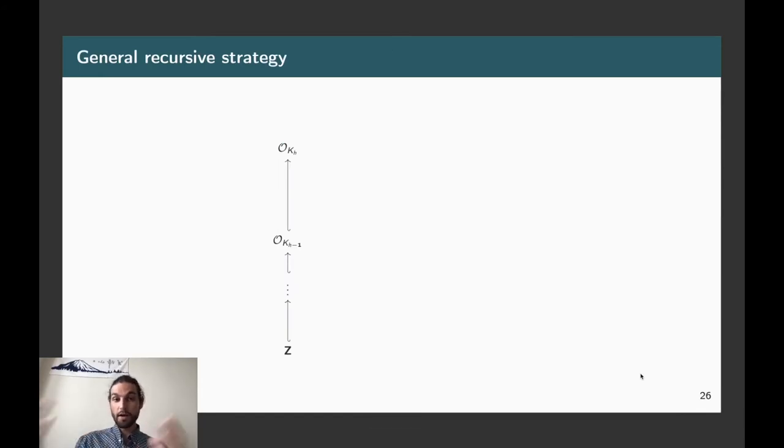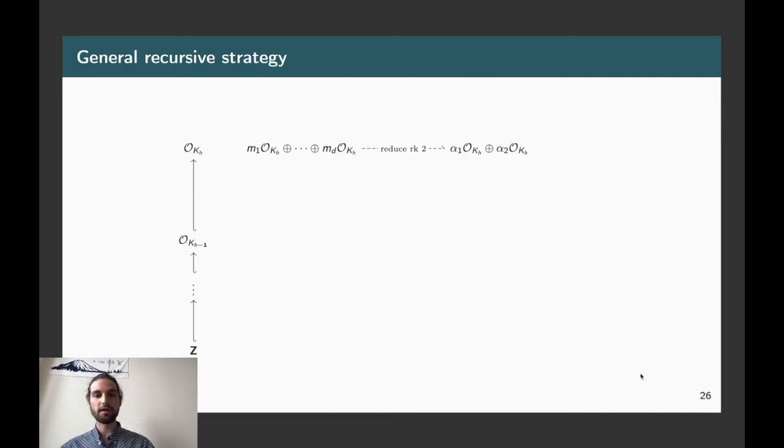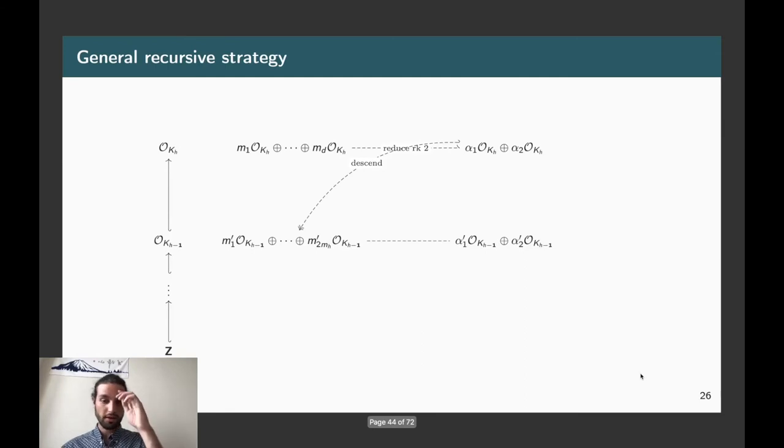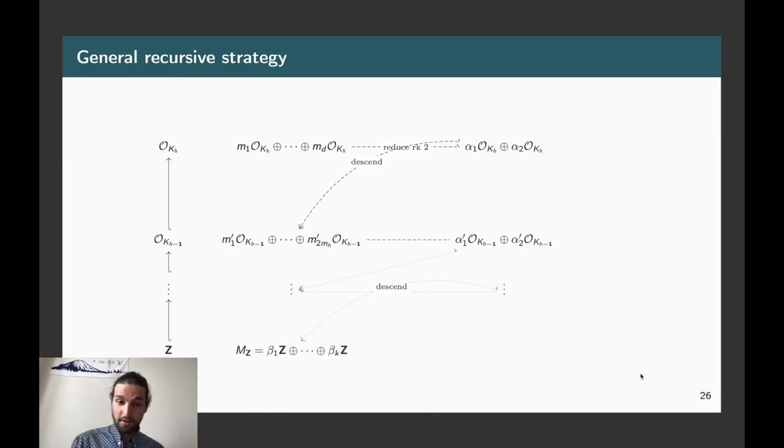So, just to give you another view of the algorithm. Here, I take a tower of number fields, so big field K_H, which is a suitable tower, which is just under. And suppose we want to reduce a rank D lattice over K_H. So, as I said, what we're going to do is to call the reduction of multiple instances of projected sublattices of rank 2. And what we're going to do is to descend this sublattice. So, we are descending it over the subfield, which is right under. So, we get some new lattices. And what we're going to do is, again, call the reduction to reduce the problem to solving the reduction problem for rank 2 sublattices. And we do that again and again, until we reach Z.